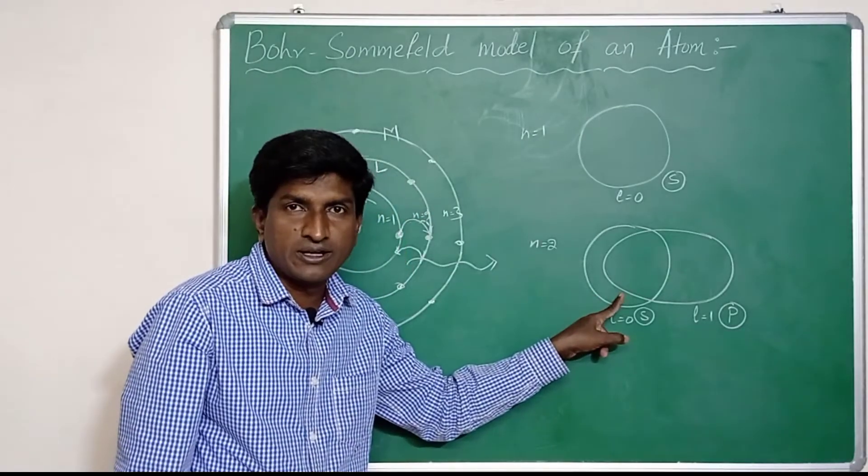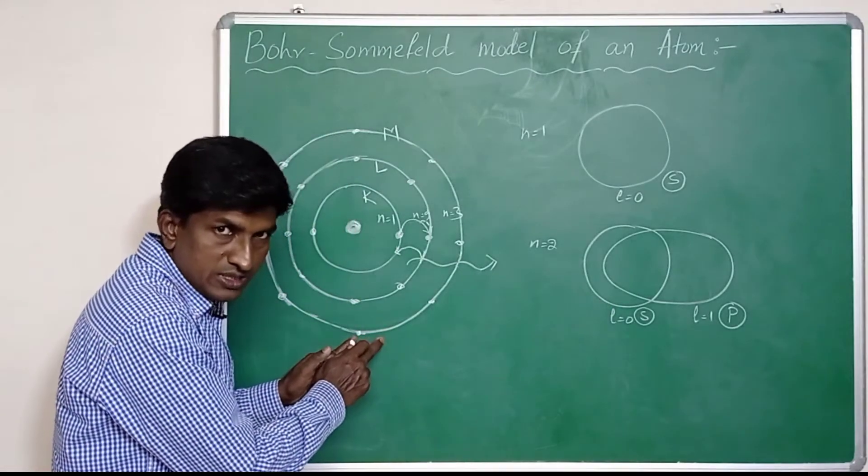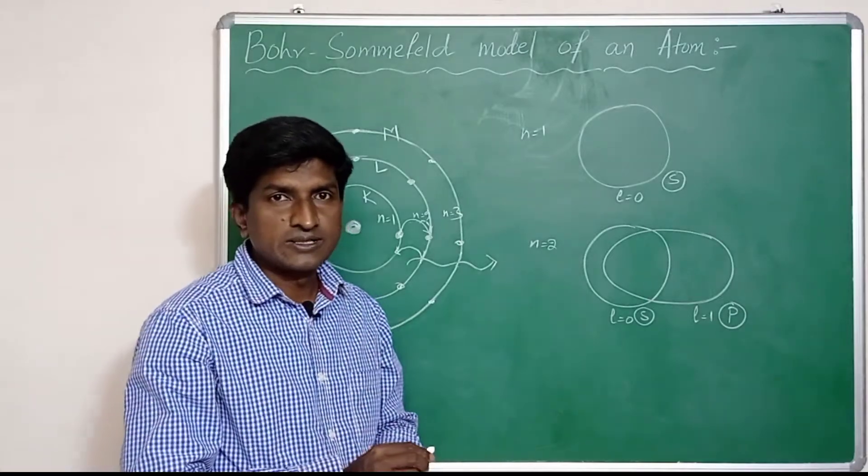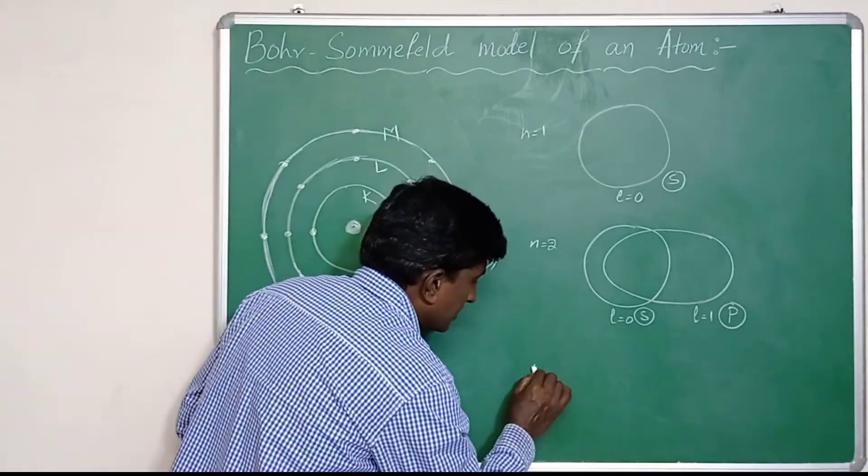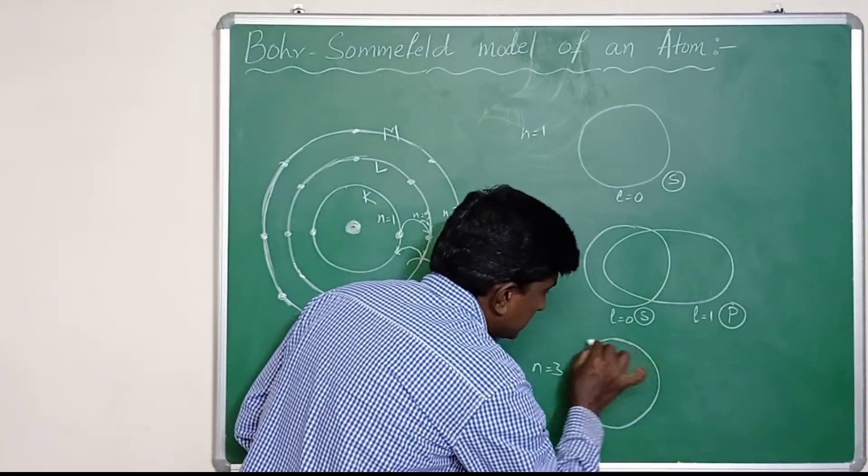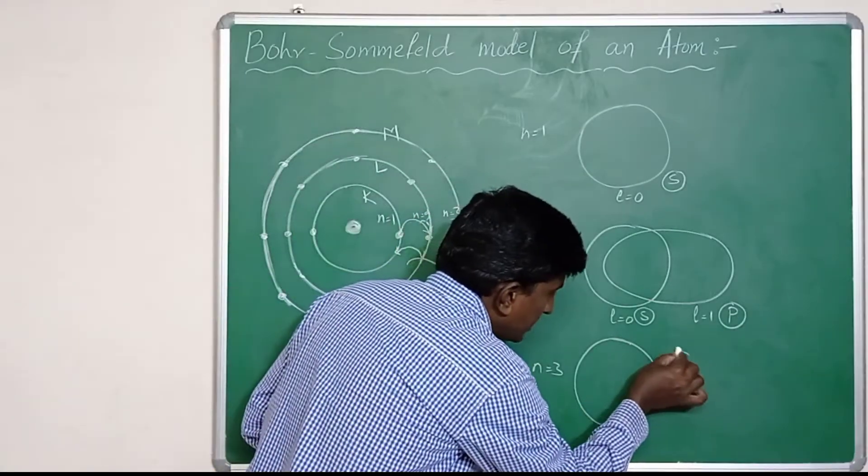For the third Bohr orbit, Sommerfeld added two elliptical orbits. So the third Bohr orbit, n equal to 3, the first one is circular, and it is splitting into three subshells.